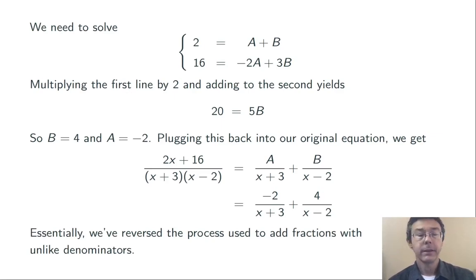Essentially what we're doing here is reversing the process that we use when we add fractions that have unlike denominators, starting with something with a common denominator, getting back a sum of two things that do not have a common denominator.